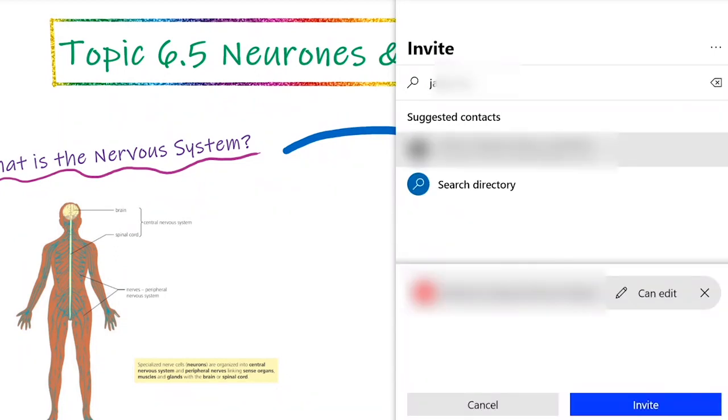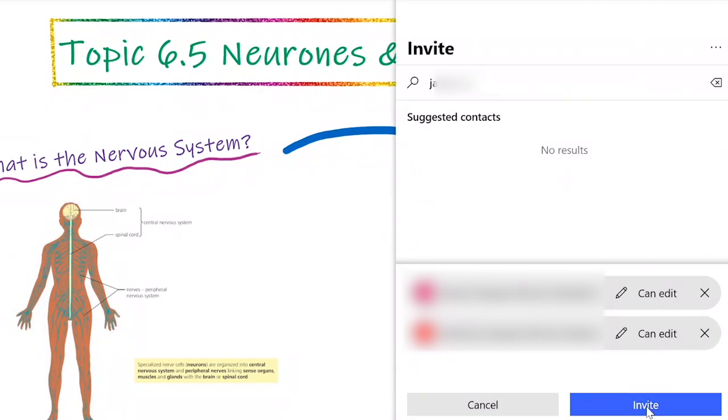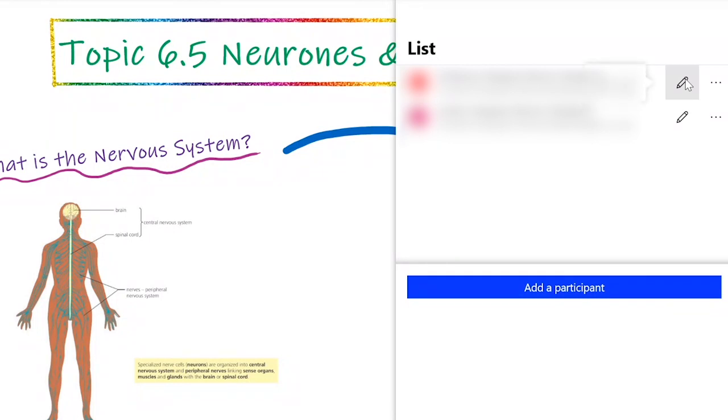As the owner of the whiteboard you can change and edit the permissions for each individual student by clicking on the pencil icon and choosing read only if you want to prevent any changes occurring on the canvas.